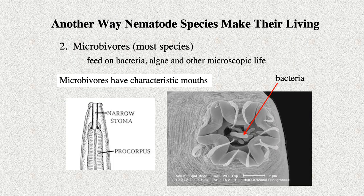The most common way nematodes make a living is by feeding on bacteria and other small microscopic life in sediments like soil. Such nematode species have characteristic mouths and other structures that help them ingest bacteria. In the photo on the right, you can see bacteria in the mouth of this nematode. We call these nematodes microbivores. We can tell much about what a nematode feeds on by looking at its mouth parts.